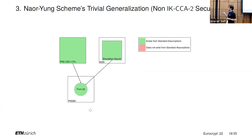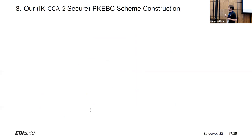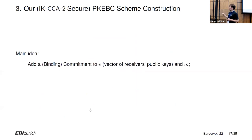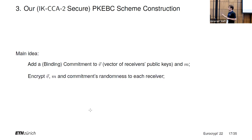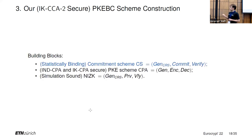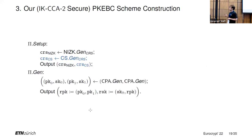So let's make the previous scheme anonymous. The main idea is to add a binding commitment to the vector of receivers' public keys and also to the message. Then, instead of just encrypting the message, we'll encrypt the vector of public keys, the message, and also the random coins used to compute the commitment. The building blocks are the same as before, but now we also need a statistically binding commitment scheme, and the underlying PKE scheme also needs to be IK-CPA secure.